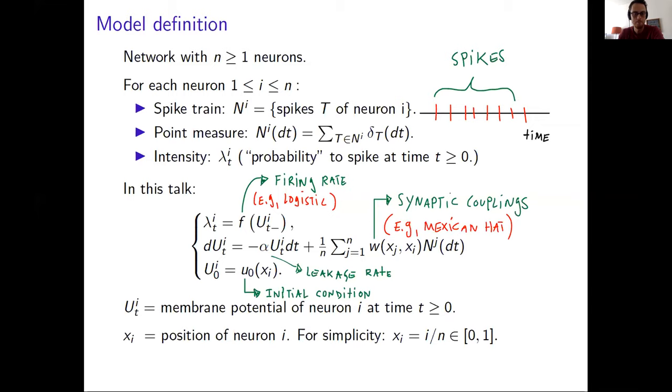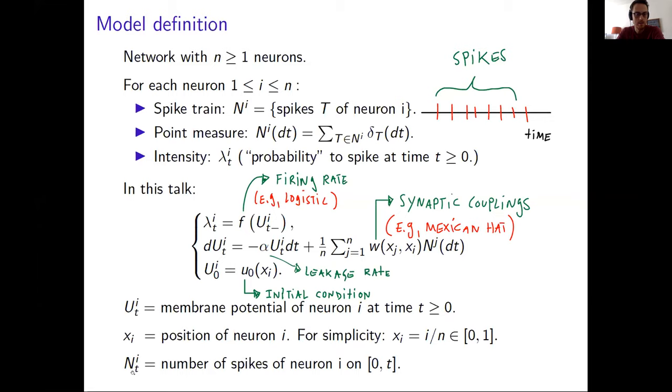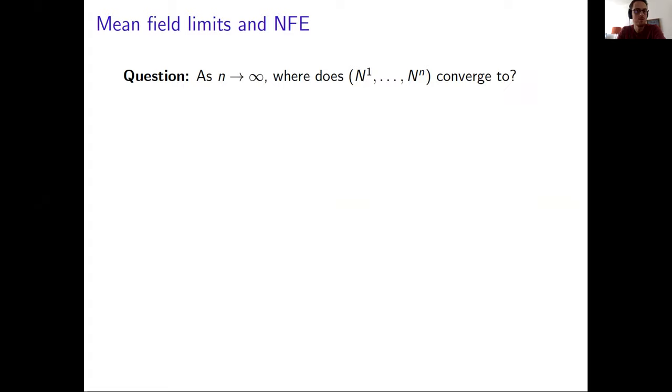And just for the remaining part of my talk, I will denote n_i(t) as the number of spikes of neuron i on the interval zero t. So let's discuss very briefly the results we were able to prove and relate this with Neural Field Equations. The question of interest here is to understand the convergence of this point process as the size of the network gets larger and larger.